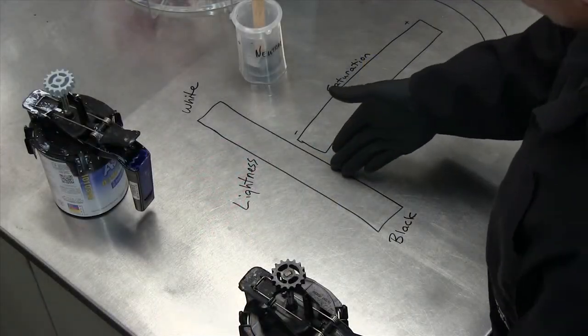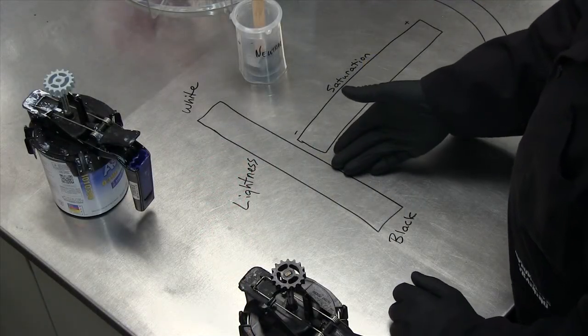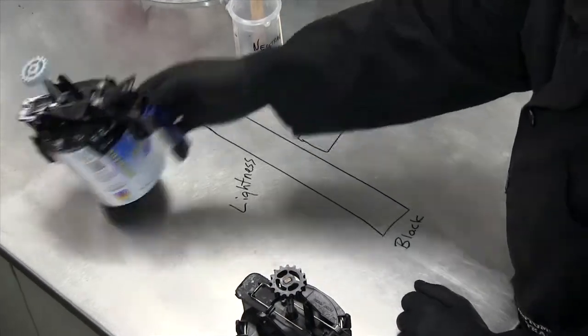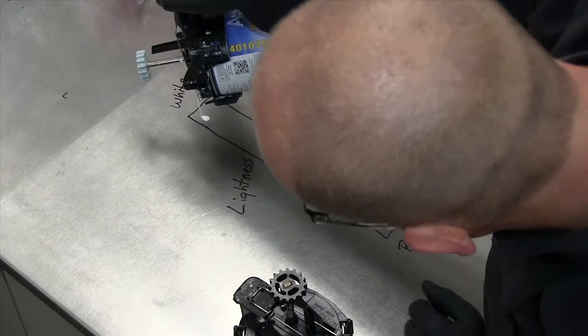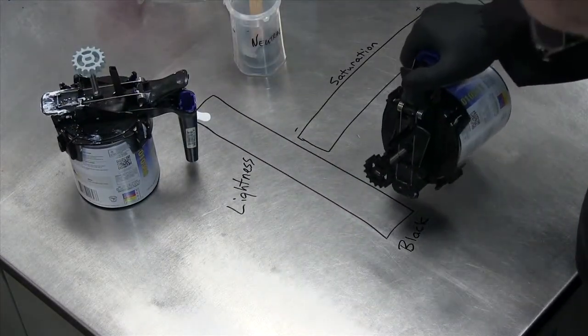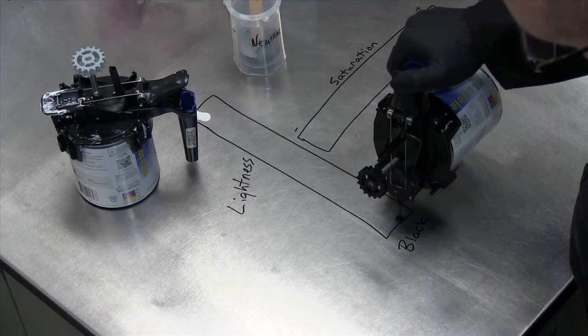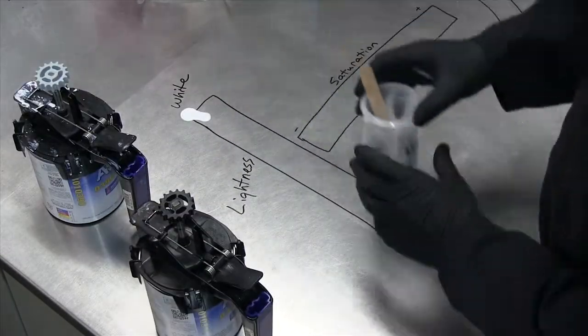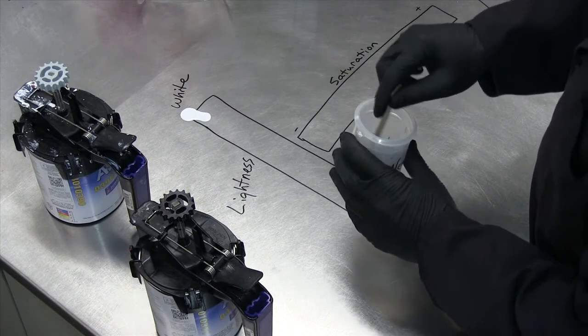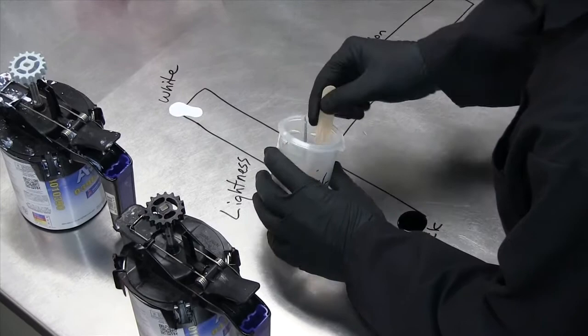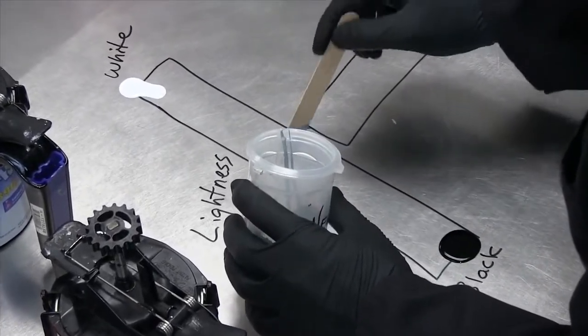What we have here is a graph representing the neutral lightness axis of the color wheel. At the top of it, we have white. At the bottom of it, we have black. If we add white and black together, we'll get gray. This is the neutral gray that represents the color that we mixed up earlier. I'm just going to put some of our gray paint right here in the middle.